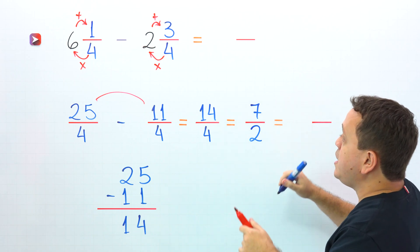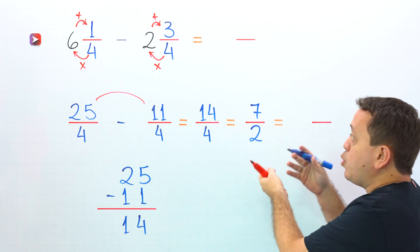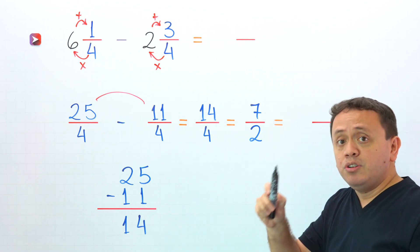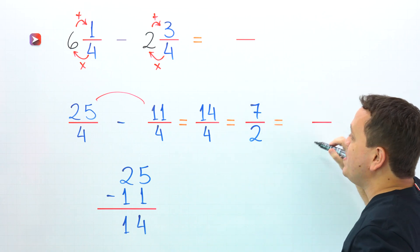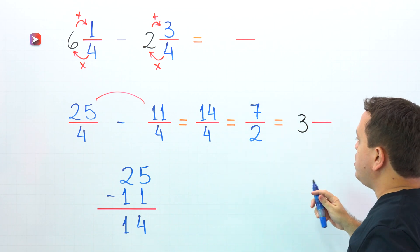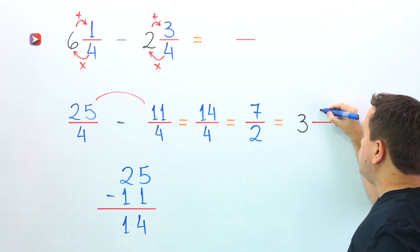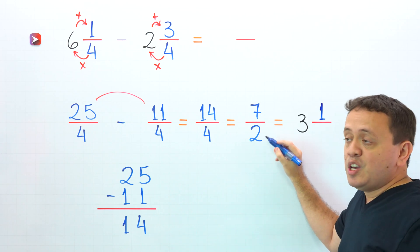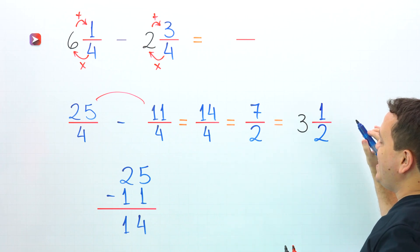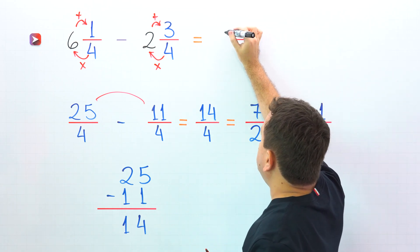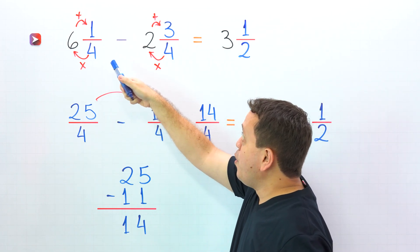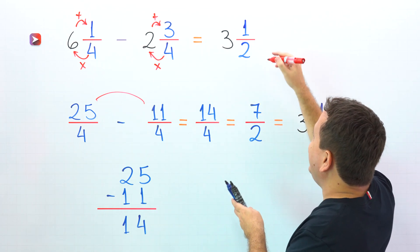However, 7 halves is an improper fraction, and we don't want the answer as an improper fraction — we need it as a mixed number. So we are going to convert 7 halves to a mixed number. How many times does 2 go into 7? 2 goes into 7 three times, and 3 times 2 is 6. To get 7, we need to add 1, keeping the denominator 2. The final answer is 3 and one-half. So 6 and one-fourth minus 2 and three-fourths equals 3 and one-half.